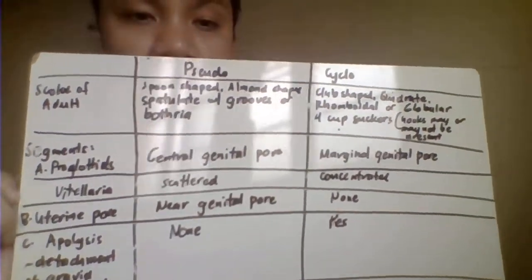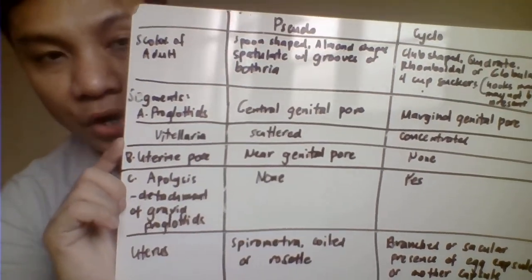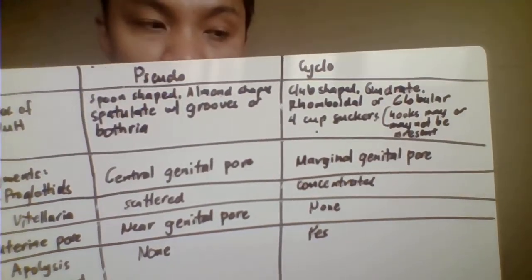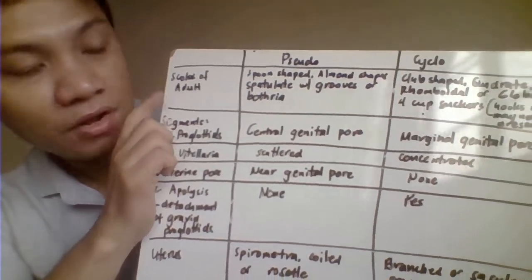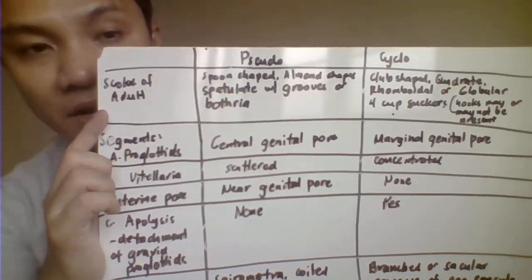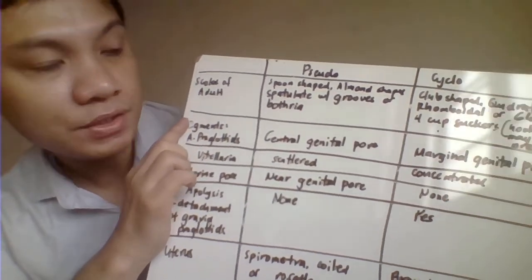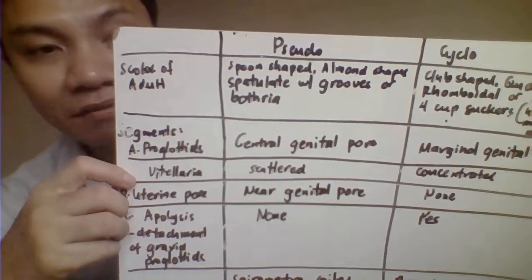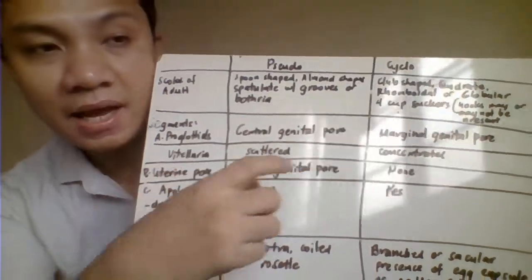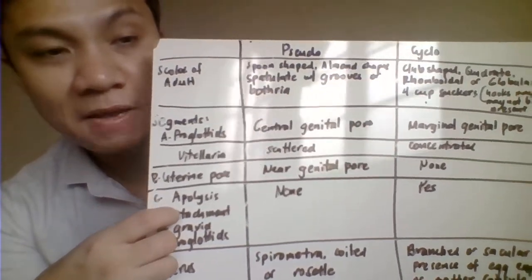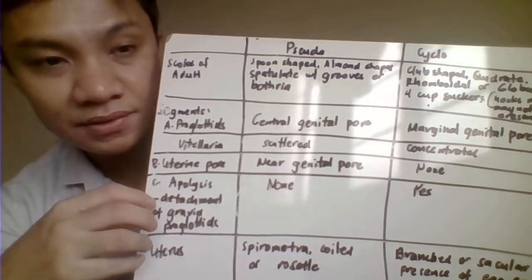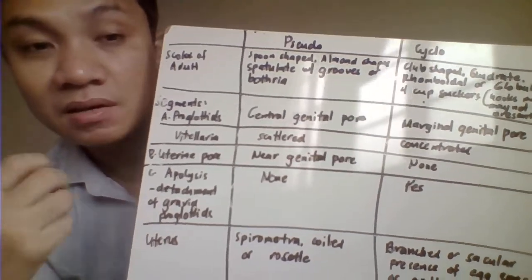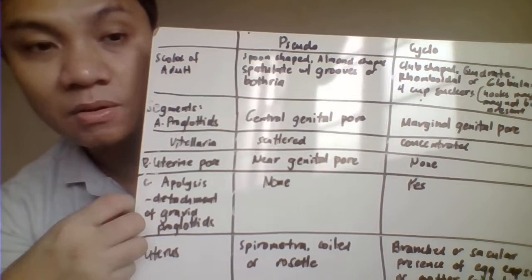Differentiating Pseudophyllidea and Cyclophyllidea: Pseudophyllidea includes only Diphyllobothrium latum; all others belong to Cyclophyllidea. For the scolex, Pseudophyllidea is almond-shaped or spatula/spoon-shaped, with sucking grooves called bothria. Cyclophyllidea is French, club, or rhombic-shaped with four cup-shaped suckers, and may be armed with hooks or spines, or unarmed.